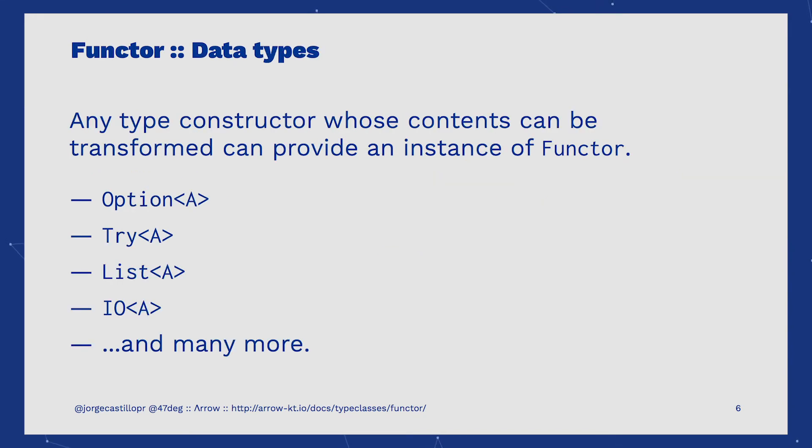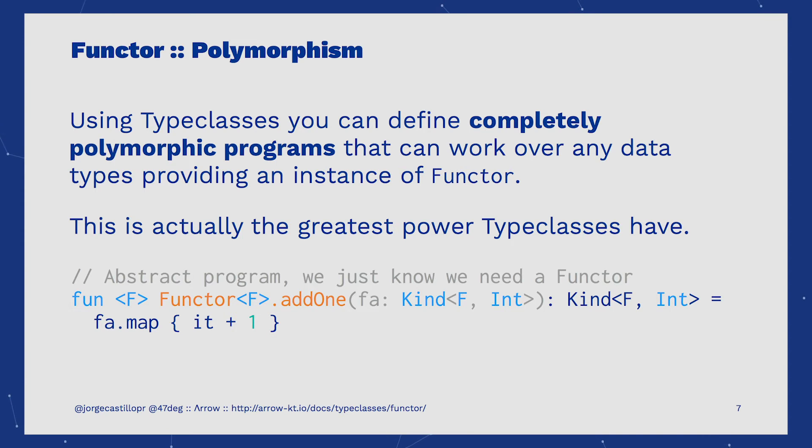We previously said that the Functor can work over any type constructor F. The truth is that F must be a data type that's able to provide an instance of Functor for it. Some examples would be Option, Try, List, IO, and many more. The ability to write polymorphic programs working over any data type is the most important thing to learn about type classes.